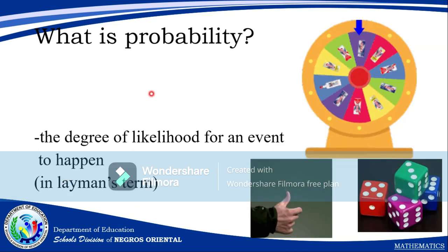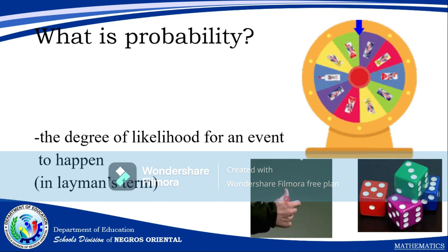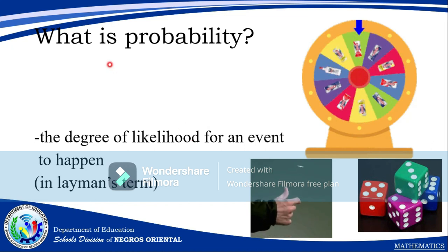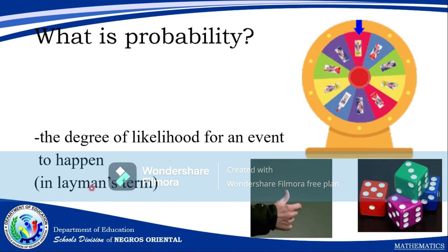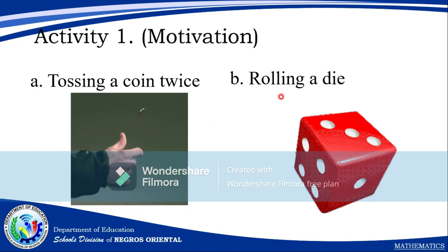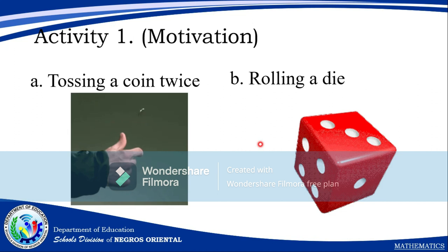What do you mean by probability? Have you seen a wheel of fortune, or have you seen somebody toss a coin, or have you seen a dice? Probability is the degree of likelihood for an event to happen, in layman's terms. For example, tossing a coin twice — what's the probability that two heads will come out, or two tails? Or rolling a dice — what is the probability that three will appear? That is an example where probability is being used.